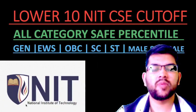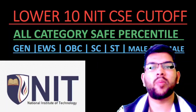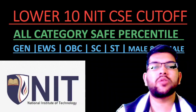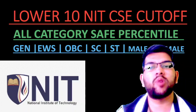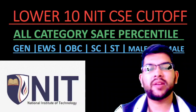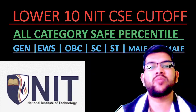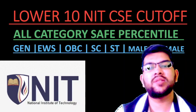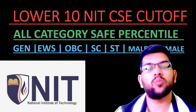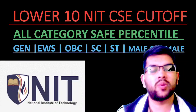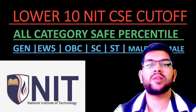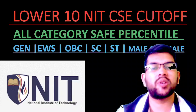Hi, this is Amit and you are watching my channel's information and educational video. Here I will talk about the lower 10 NIT CSE cutoff — that is the minimum percentile you need, category-wise, to get into an NIT with the CSE branch. I have already discussed similar videos for the top 10 NIT and top 11 to 20 NIT. Here you will get similar information for the lowest possible NITs, covering all categories: General, EWS, OBC, SC, ST — male and female — including home state and other state.